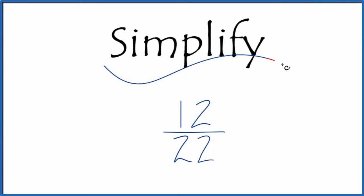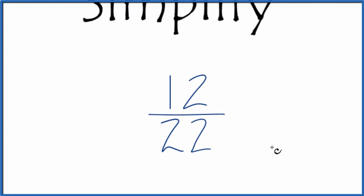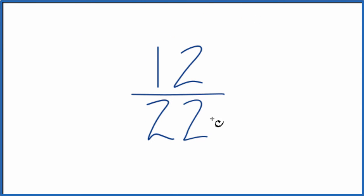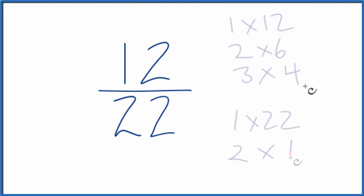If you need to simplify the fraction 12/22, here's how you do it. We're looking for another fraction that's equivalent to 12 divided by 22 — it has the same value, it's just that we've simplified or reduced it to lowest terms. So let's list the factors for 12 and 22.